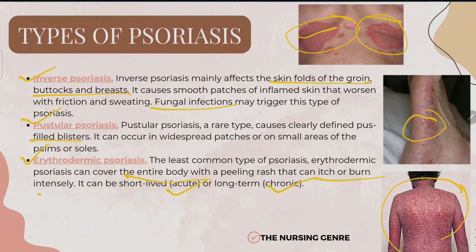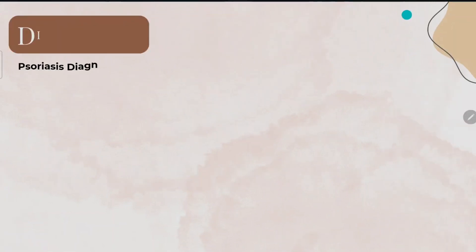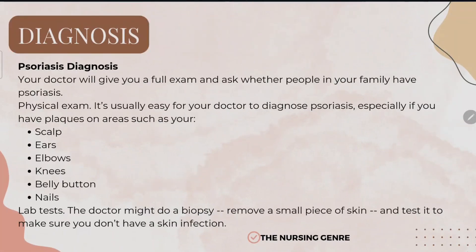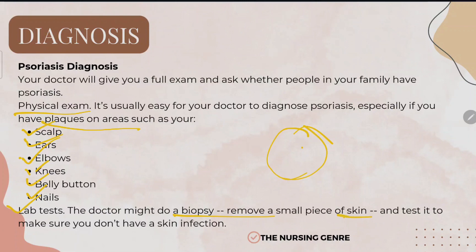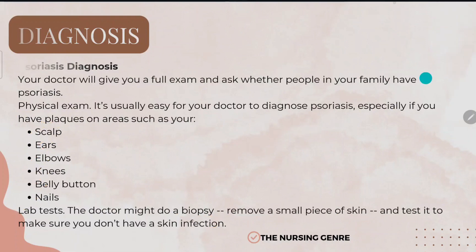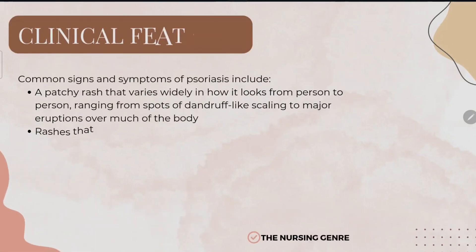Those are the six types of psoriasis. For diagnosis, the doctor will give you a full exam and ask whether anyone in your family has psoriasis. A physical examination looks for plaques on the scalp, elbows, knees, belly button, and nails. Lab tests may include a throat swab for bacterial infections like strep throat, along with blood tests and scrape tests.